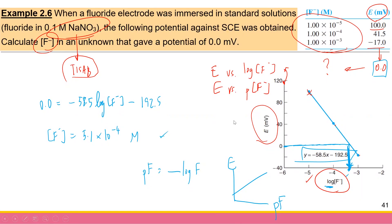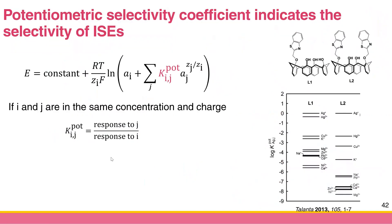All of this assumes your electrode only responds to one kind of ion. In real life, your electrode may respond to several kinds of ions. For example, the glass membrane electrode may respond to sodium in addition to protons — sodium becomes an interference. There are ways to quantify such interference using something called the potentiometric selectivity coefficient.